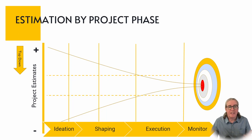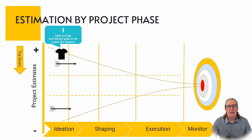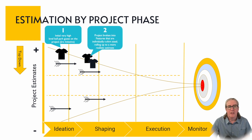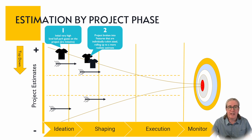Here we've got our standard project phases. In this example, we've got ideation, shaping, execution and monitor, but it can be whatever your standard phases are within your organisation. The idea is that at the very beginning during that initiation phase, you do that very high level ballpark estimation on the project — that t-shirt sizing — so that might be small, medium, large, and typically that would relate to some sort of day figure. You would then break that project down into individual features, and these would be individually t-shirt sized during a separate session, rolling up into a more realistic estimate as you've started to shape this out.